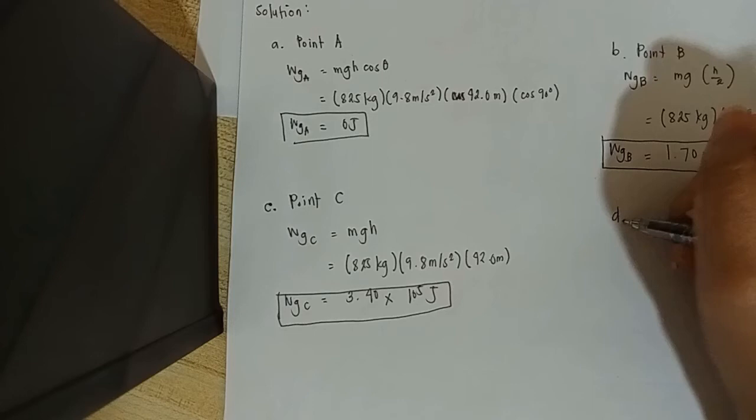For letter D, we are asking if the mass were doubled, would the change in gravitational potential energy of the system between points A and B increase, decrease, or remain the same? So look at our solutions. As you can see, the mass is proportional to the answers, to our gravitational potential energy. Which means if the mass were doubled, our answers will also be doubled because they are proportional to each other.